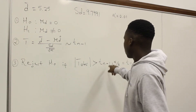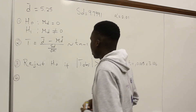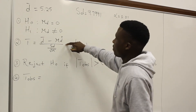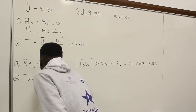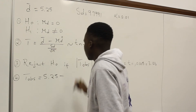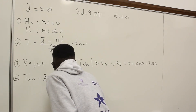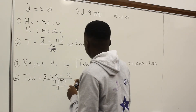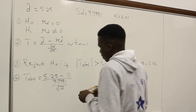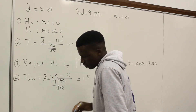From the t-table at degrees of freedom 11 and probability 0.005, we find the value 3.106. Step four is calculations: t observed equals the mean difference of 5.25 minus μ_d of 0, divided by the standard deviation 9.7991 over the square root of n equals 12. This gives t observed equals 1.8559.